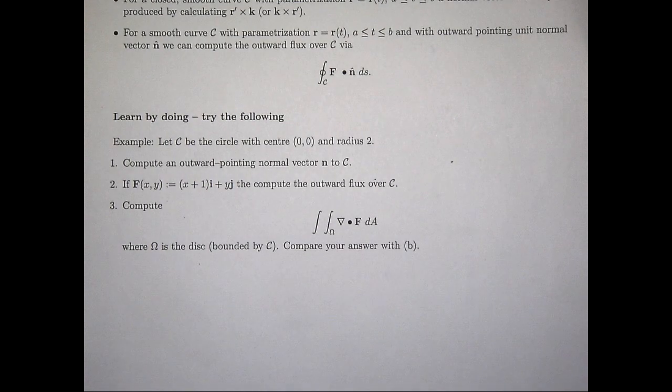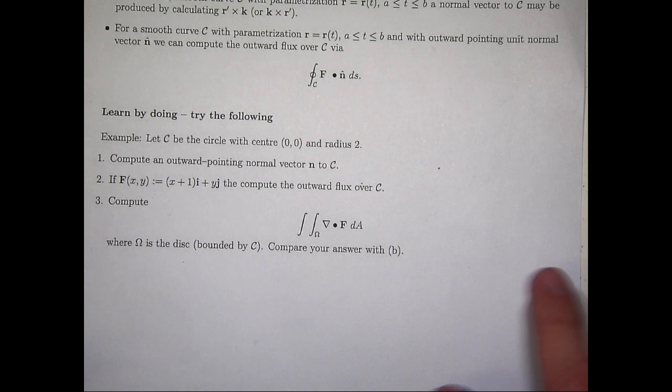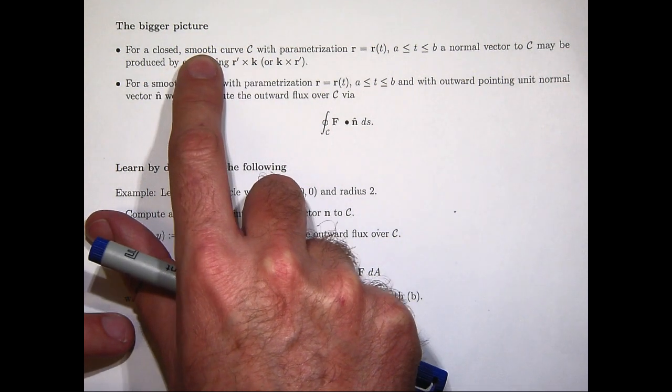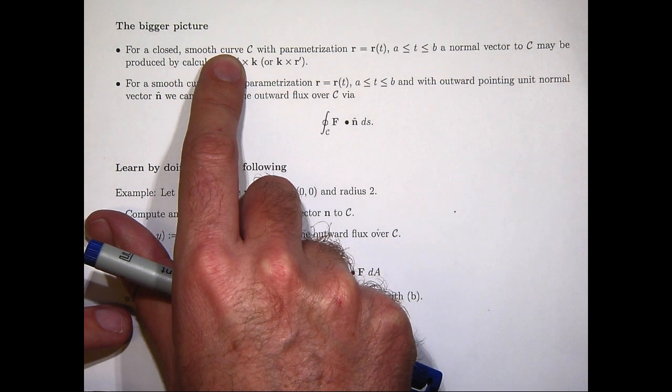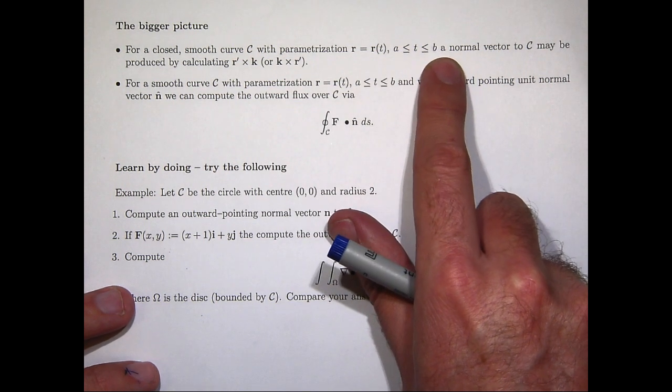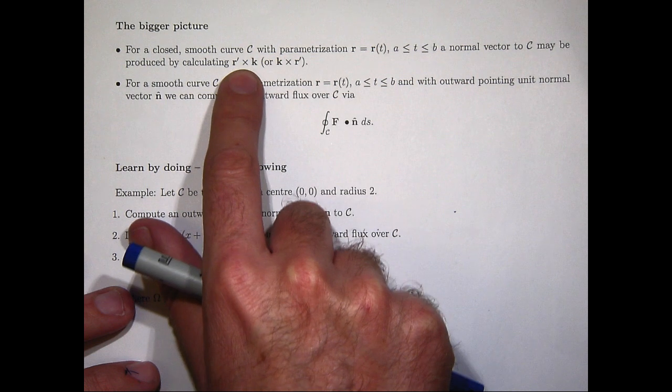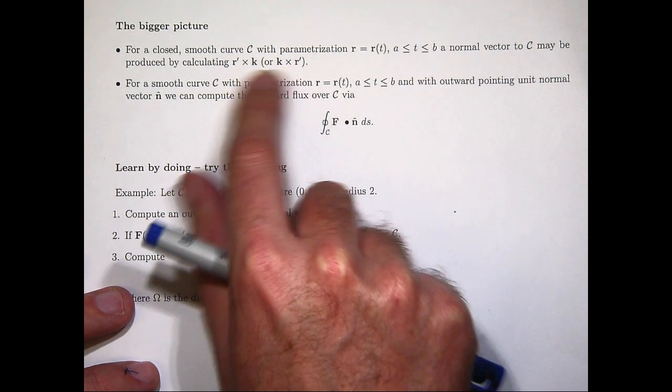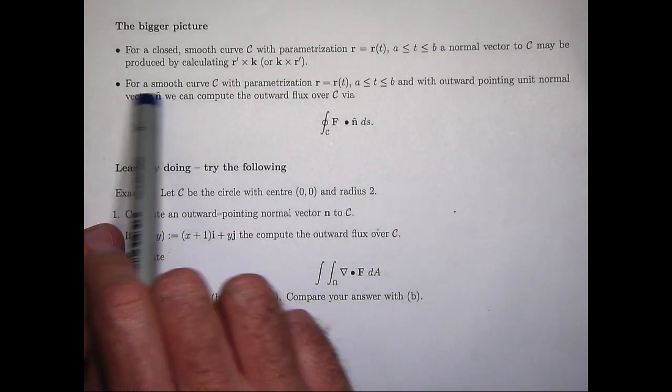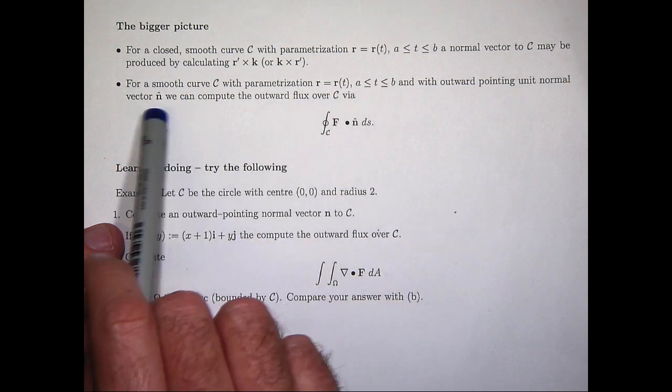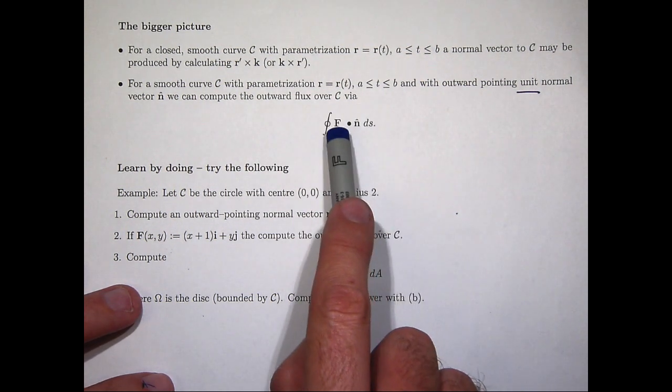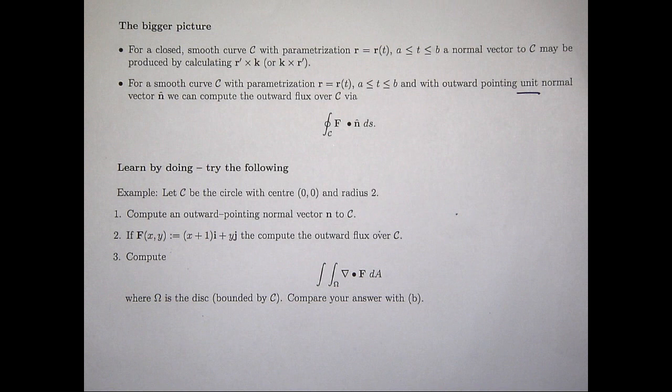So suppose we have a closed smooth curve C. So by smooth, I mean the parametrization has a continuous derivative, and that derivative is never the zero vector. Any normal vector to C may be produced by using this, depending on whether you want it to be outward pointing or inward pointing, and depending on your orientation. For some smooth curve C with parametrization R, an outward pointing unit normal vector n hat, we can compute the outward flux over C by basically integrating f dot n hat over the curve C.